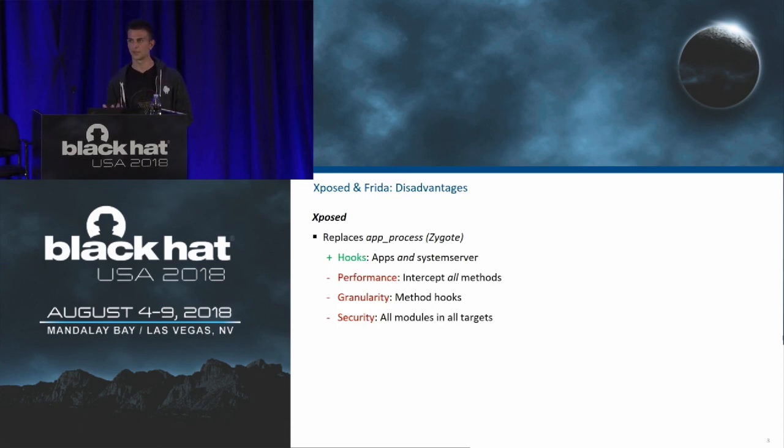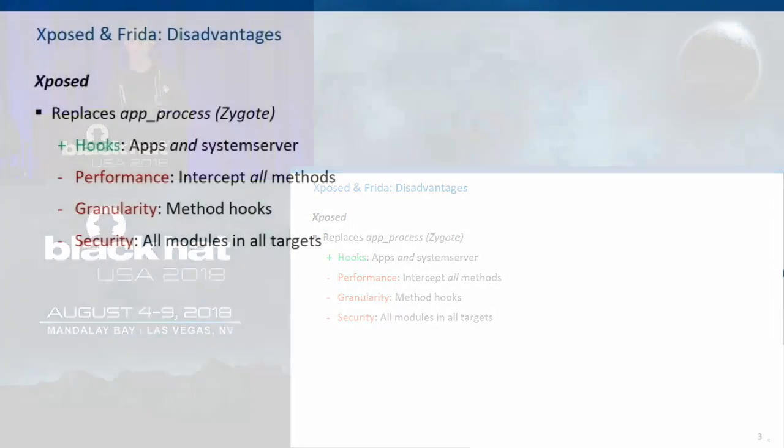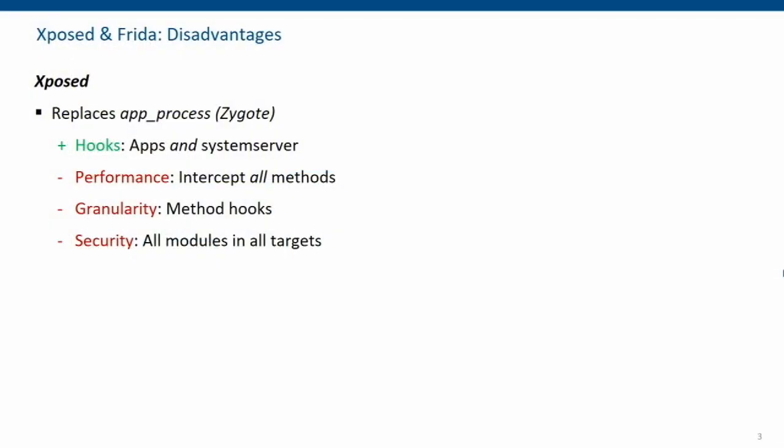There are three things I want to discuss. The first is performance: Xposed hooks all methods and multiplexes them through a single API, checking if a hook exists for each method and executing it if so, otherwise executing the original. This means you lose some performance.